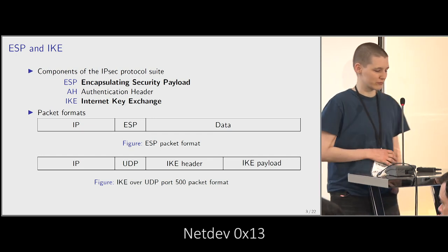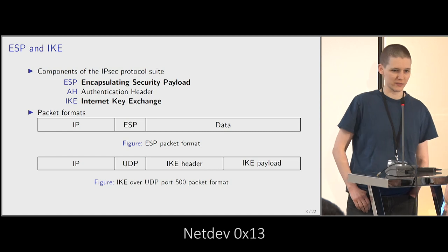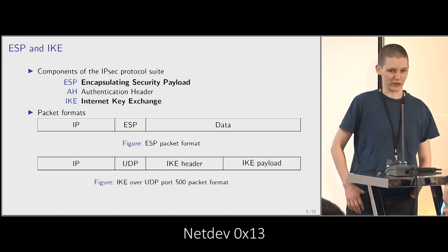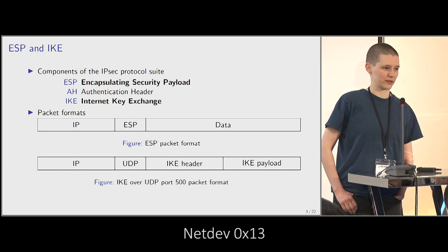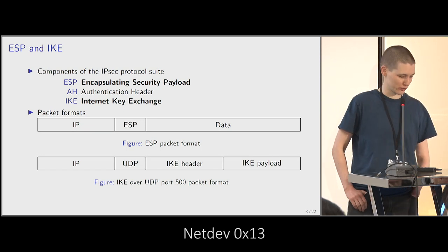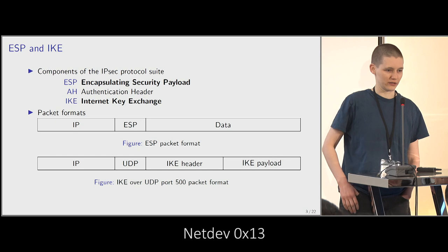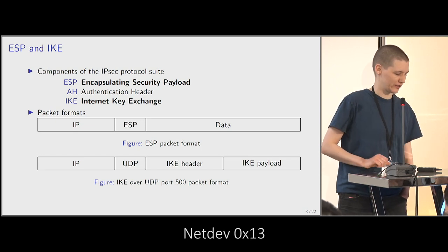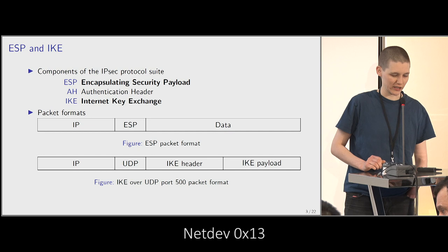The packet format for ESP is just an ESP header over IP, and then you've got your encrypted data. For IKE, it goes over UDP port 500 — so IP, UDP header, and then you get the IKE header and the IKE payload.